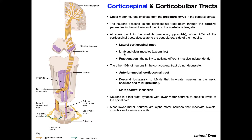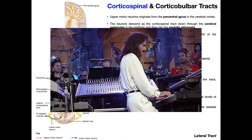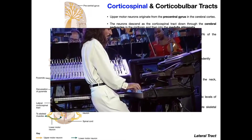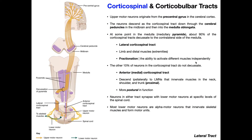The upper motor neurons of the lateral corticospinal tract synapse with lower motor neurons that are controlling distal muscles in the extremities and limb muscles — the intrinsic muscles of the hand, intrinsic muscles of the foot, even the muscles of the forearm, biceps, and triceps. The lateral corticospinal tract is more important for fractionated movements, or fractionation, which is the ability to activate different muscles independently of one another. You can see this very nicely in somebody playing the piano, where different fingers on the same hand move in abduction, adduction, flexion, or extension independently. So the lateral corticospinal tract controls muscles of the distal extremities and is mainly responsible for fractionated movement.